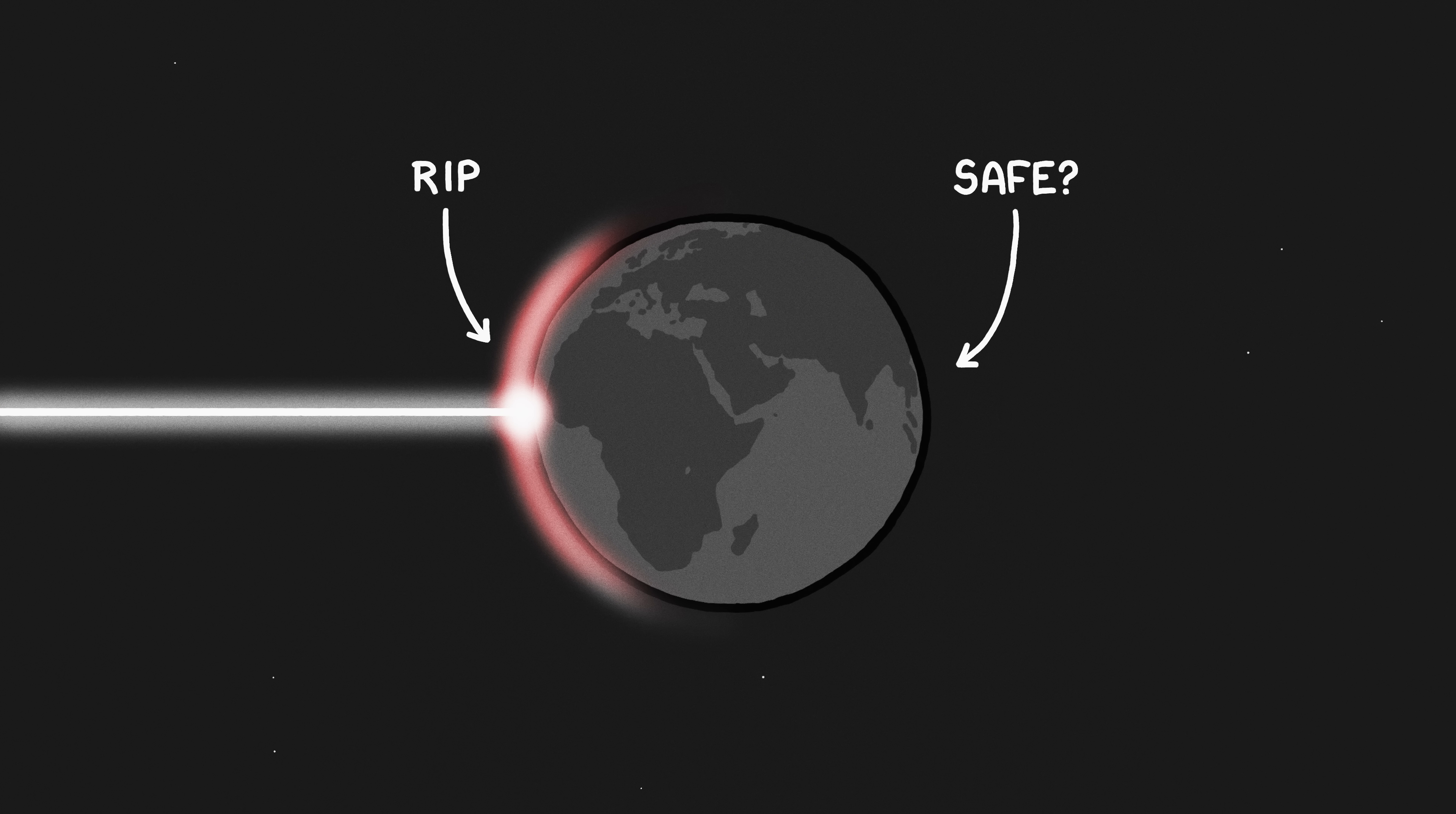But the Earth is big enough to protect people on the other side, at least for a bit, from the direct effects of the sunbeam. They're still not going to make it, but what exactly would they die from?